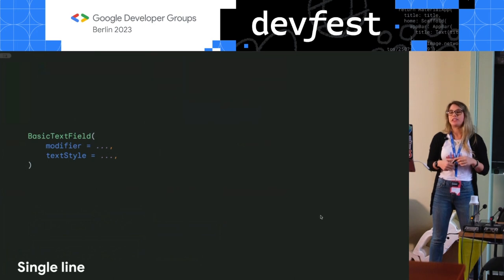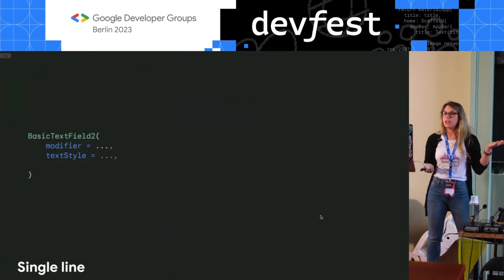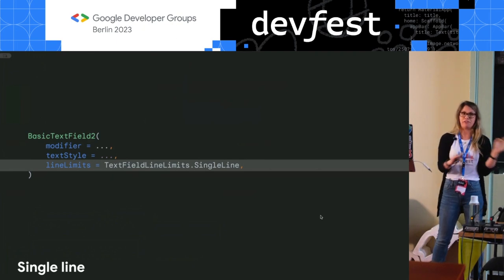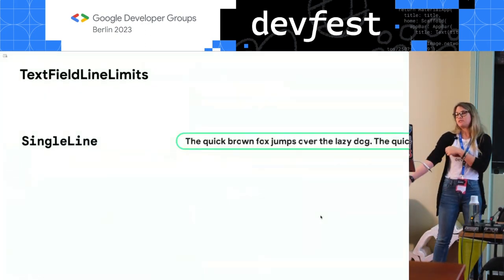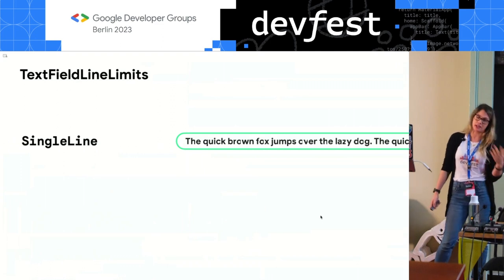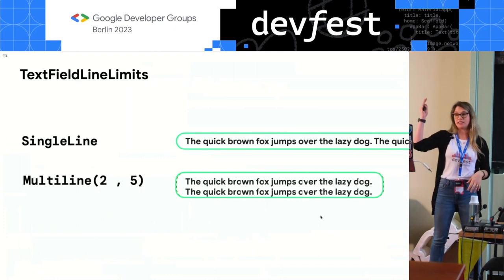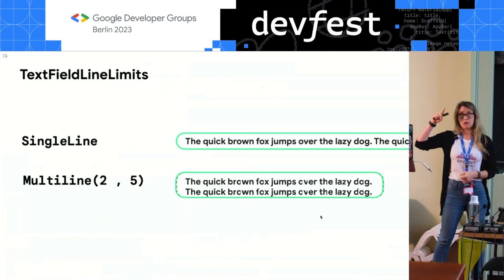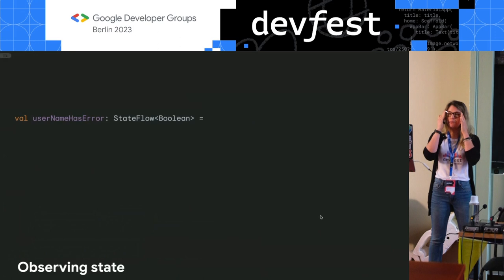For making the username a single line field, the new solution is a parameter called line limits. You configure it as TextFieldLineLimits.SingleLine — that's it, no confusion. The text field is always a single line tall with horizontal scroll if you overflow, and it ignores new lines. In contrast, multi-line lets you define min lines and max lines, the text starts at min height and grows to max, with vertical scroll enabled when overflowing.